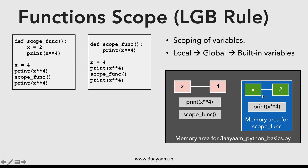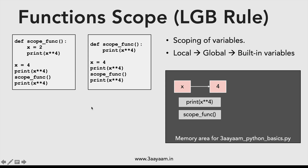After the function's execution is over, the memory area for scope_function is gone. So when I print x to the power 4 again, it points back to the value 4 in the main program's memory. This relates to heap memory and stack memory, which we'll discuss in Python's memory management. For now, remember that every function gets its own memory area — that's why scoping works this way.